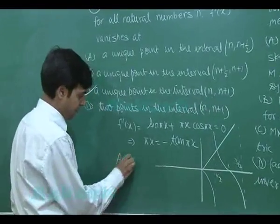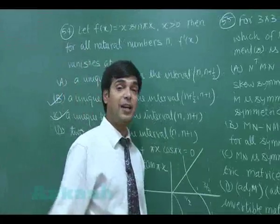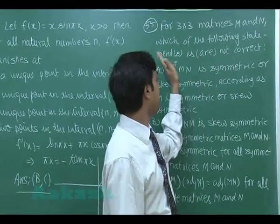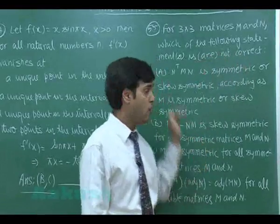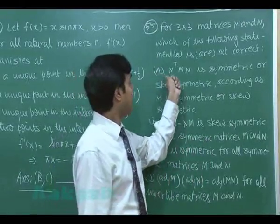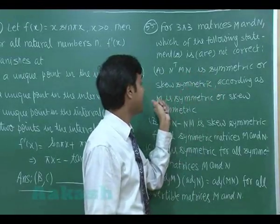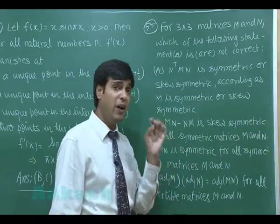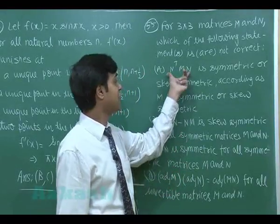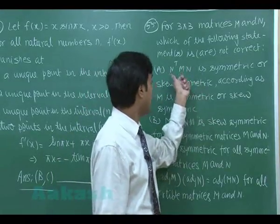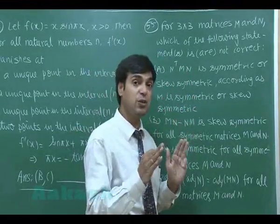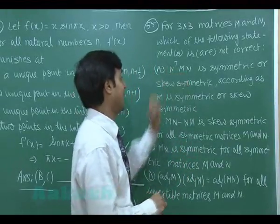Question 55: For 3×3 matrices M and N, which statements are NOT correct? Statement 1: NᵀMN is symmetric or skew-symmetric according as M is symmetric or skew-symmetric. Taking the transpose of NᵀMN gives NᵀMᵀN — if M is symmetric it remains symmetric, if M is skew-symmetric it remains skew-symmetric. So statement 1 is correct — not our answer.